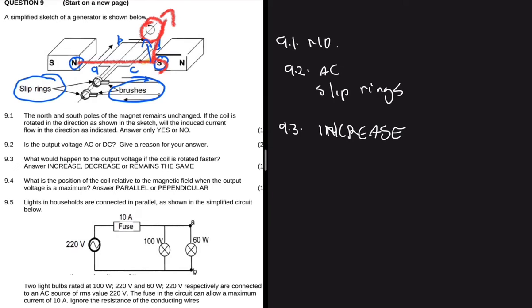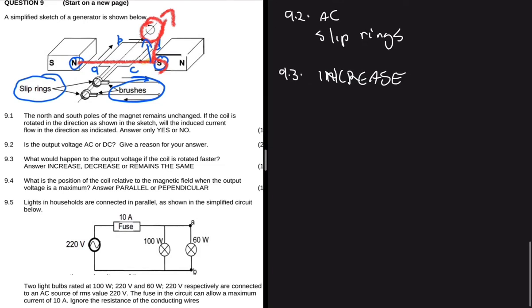And then now we can go to 9.4. Question 9.4 says what is the position of the coil relative to the magnetic field when the output voltage is a maximum? That position would be parallel, because when it's perpendicular that's when the voltage is zero, and then when it's parallel the voltage is maximum.